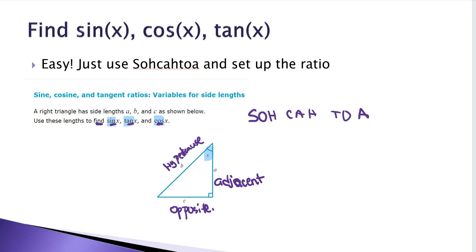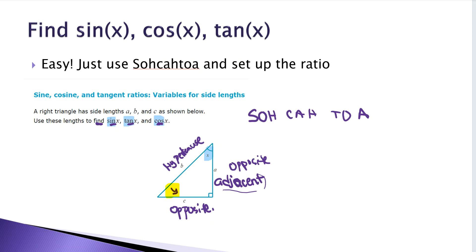Remember I said that whatever is the adjacent or the opposite depends on the angle. If we had this angle down here instead, the hypotenuse would still be the hypotenuse, and this would be the adjacent because it's the one that touches the angle. And then the one over on the right would be the opposite. So it's not true that the same side is always going to be the adjacent — you need to know which angle it is first before you label.